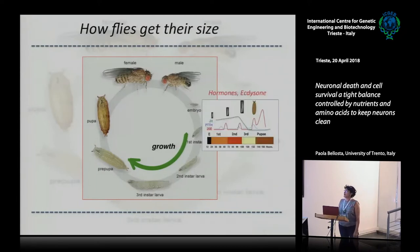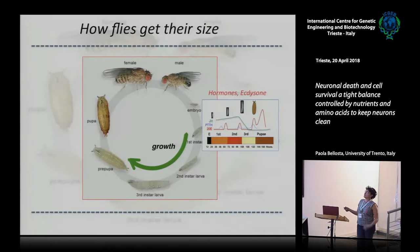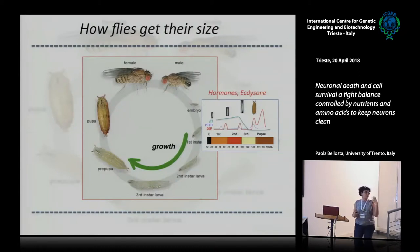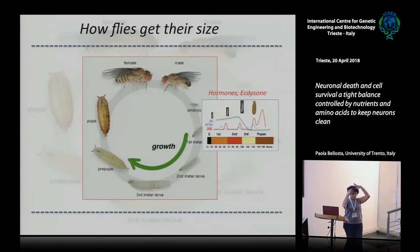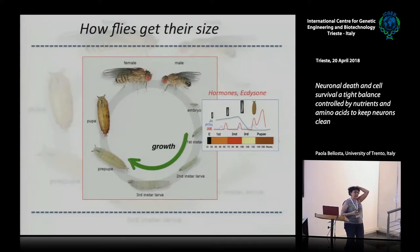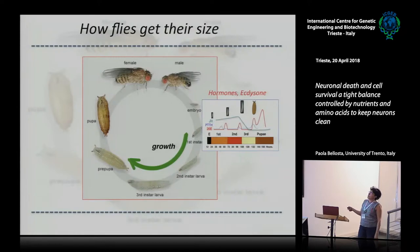Ecdysone is very important in the regulation of growth. Ecdysone is produced by the prothoracic gland, which sits between the two lobes of the brain. When you dissect the brain you will see this large replicative tissue — the ring gland — between the two lobes, which produces all these hormones.